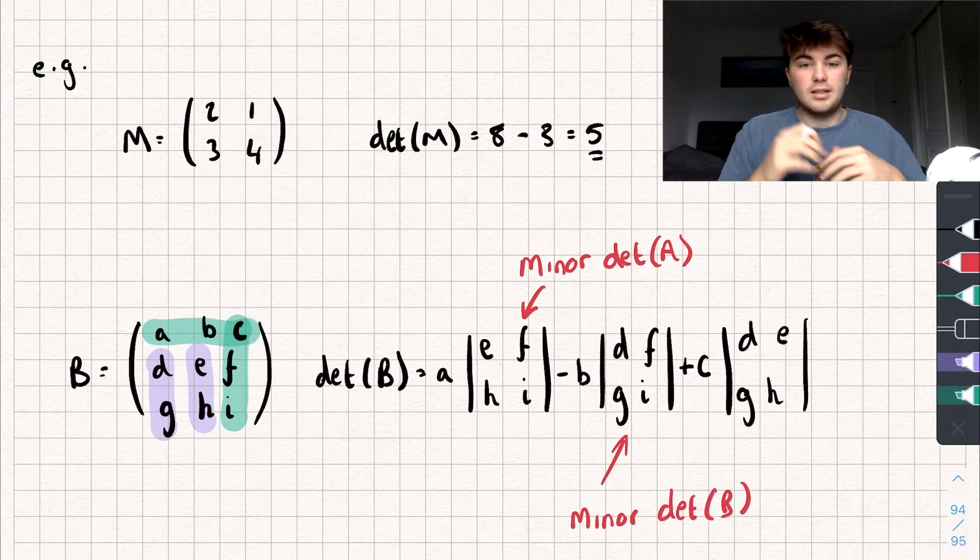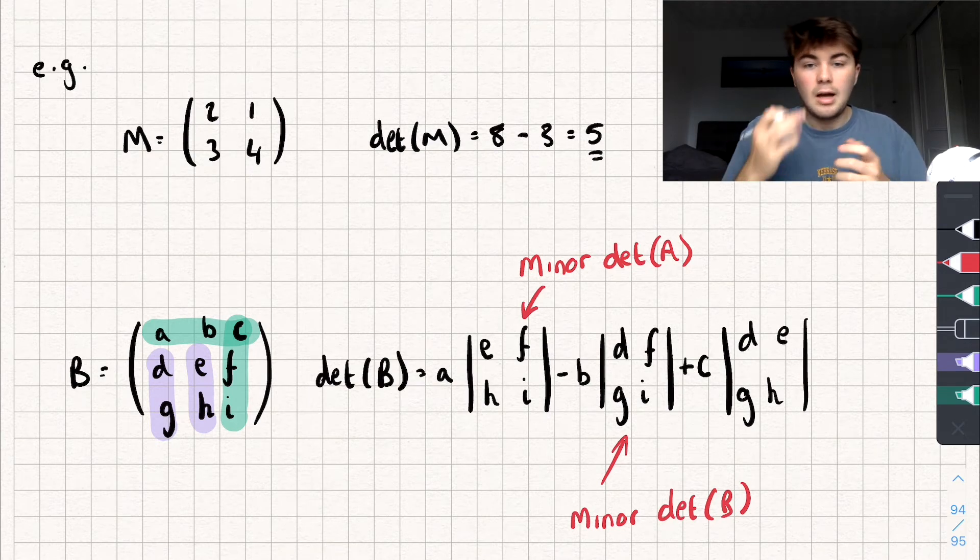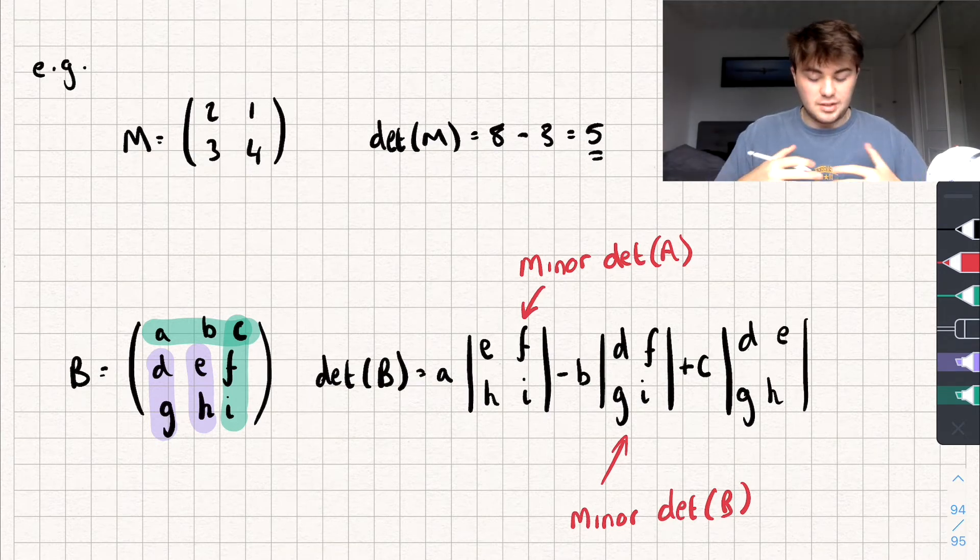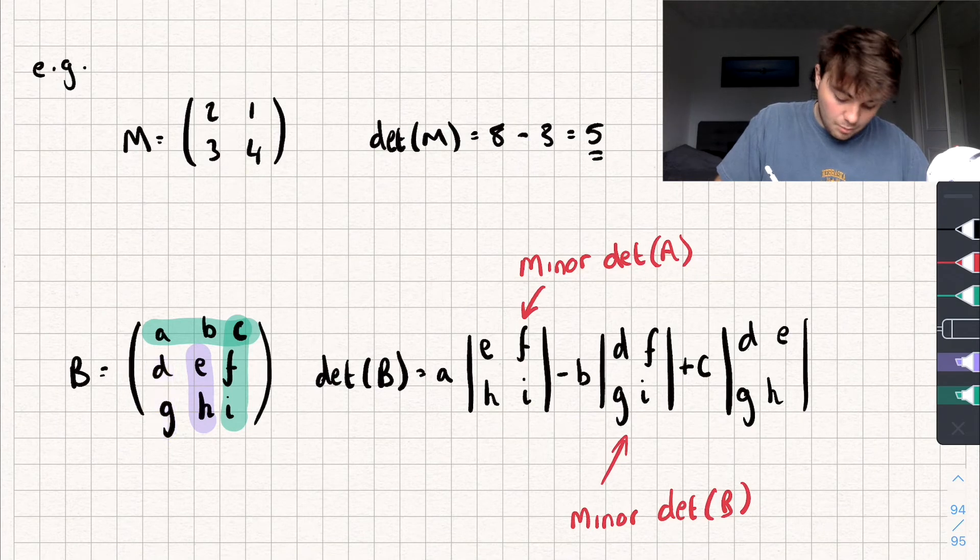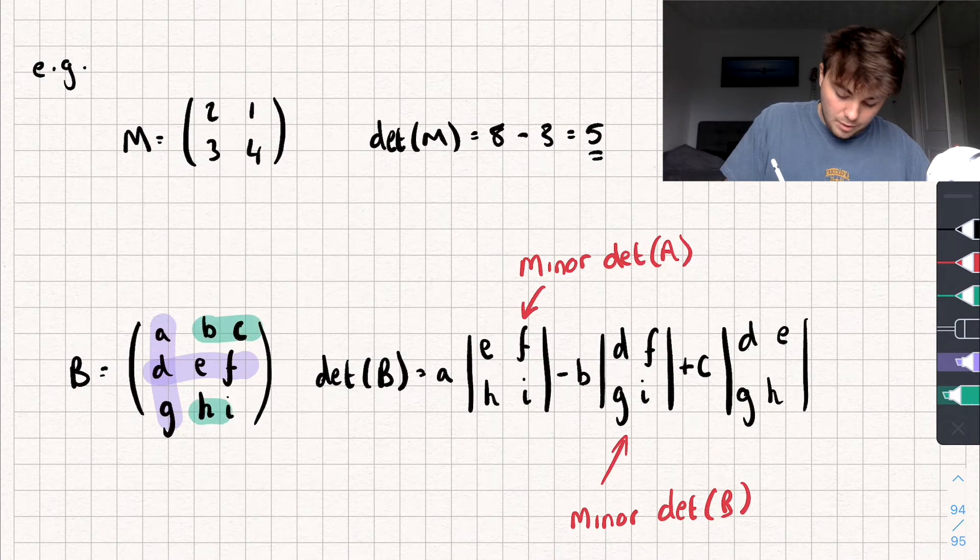And when it comes to finding the inverse of a matrix, a 3x3, we can find the minor determinant of, say, element d, and it works the same way. So we'd be eliminating the rows and columns of element d, and you can see we're left with this. But that's for my future next video.